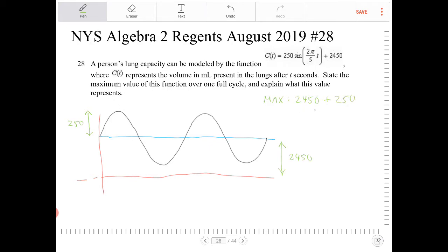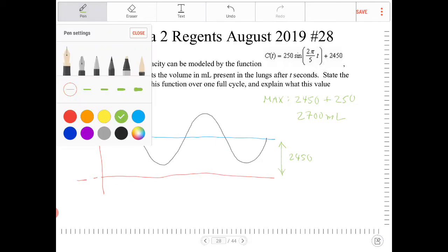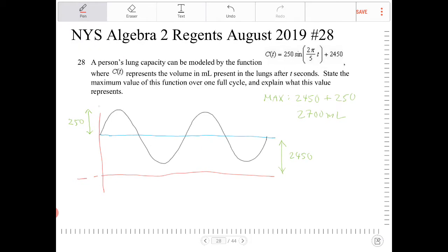So, the maximum, therefore, is going to be 2700 ml. Because the c(t) function here is measured in milliliters. The y-coordinates here are in milliliters. The x-coordinates here are measured in seconds.